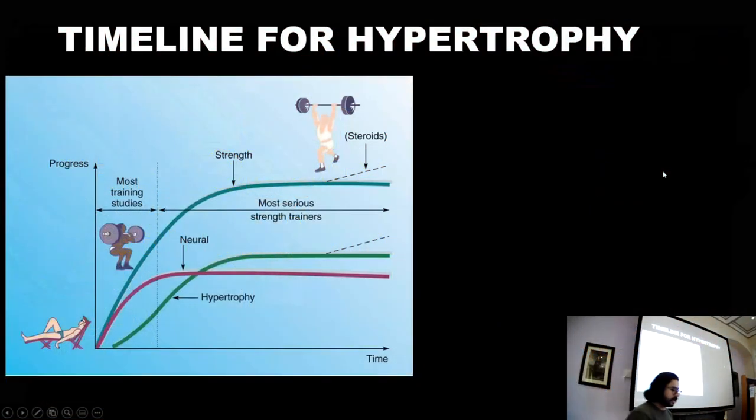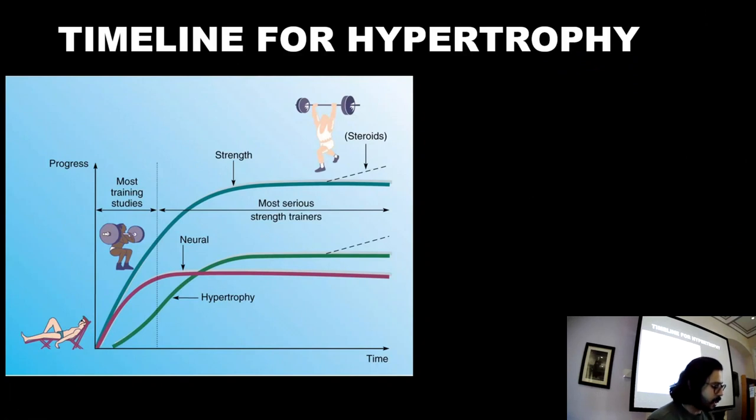Okay, so the timeline of hypertrophy. It's quite universally accepted that if you take a novice individual, somebody who's never done resistance training before, then most of the gains that they get in strength to begin with are actually due to neural adaptations.